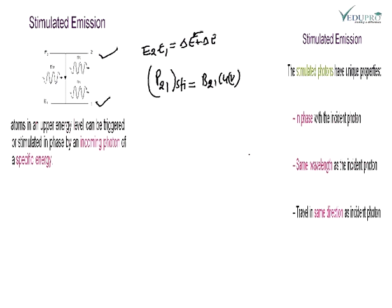तो यह जो transition हो रहा है, इसमें atom जो है excited energy state पे था, उसको हम बाहर से photon दे रहे हैं — plus — तो atom तो निकलेगा ही उसके साथ plus दो photon निकलेंगे आपके। तो यह energy आपको इस तरह से radiate करती है, and this is the main feature of laser action, which depends on the stimulated emission.